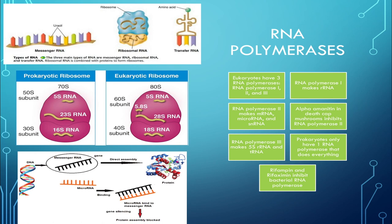RNA polymerase 1 makes rRNA, which is the most common type and is found only in the nucleolus. The rRNA helps form essential ribosomal components.